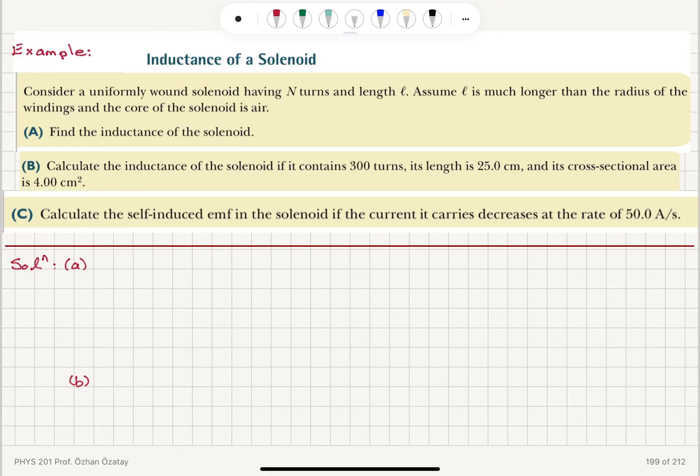Inductance of a solenoid. Consider a uniformly wound solenoid having capital N turns and length L. Assume L is much longer than the radius of the windings and the core of the solenoid is air.